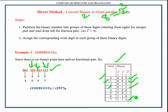If all three digits are present in a group, the weights are four, two, and one respectively. To get the octal equivalent value we add the weights of all three digits. Like this, octal values are assigned to each group based on the weight of the digits present.